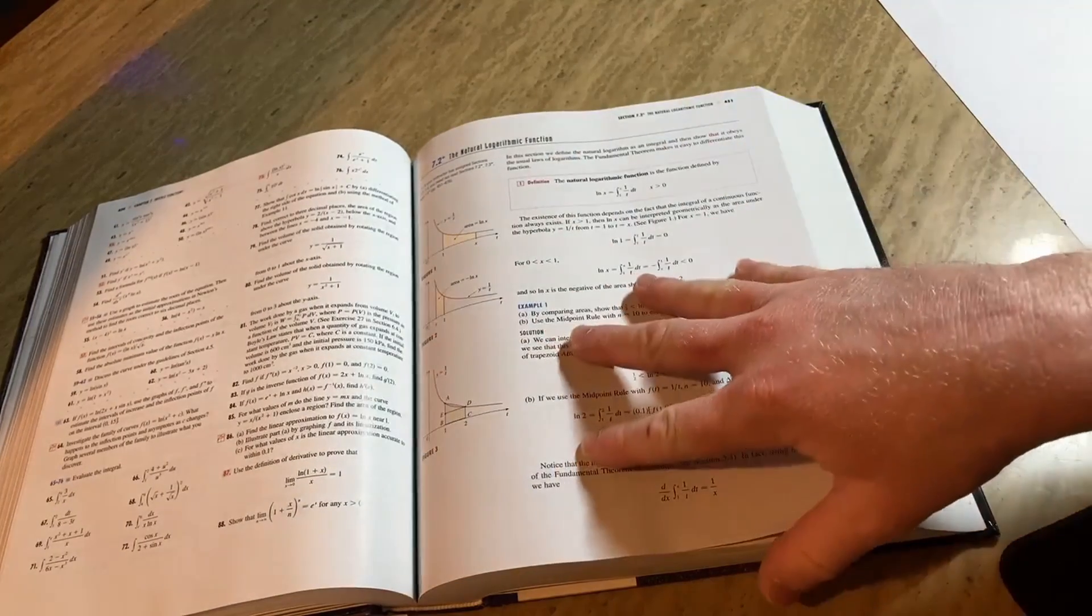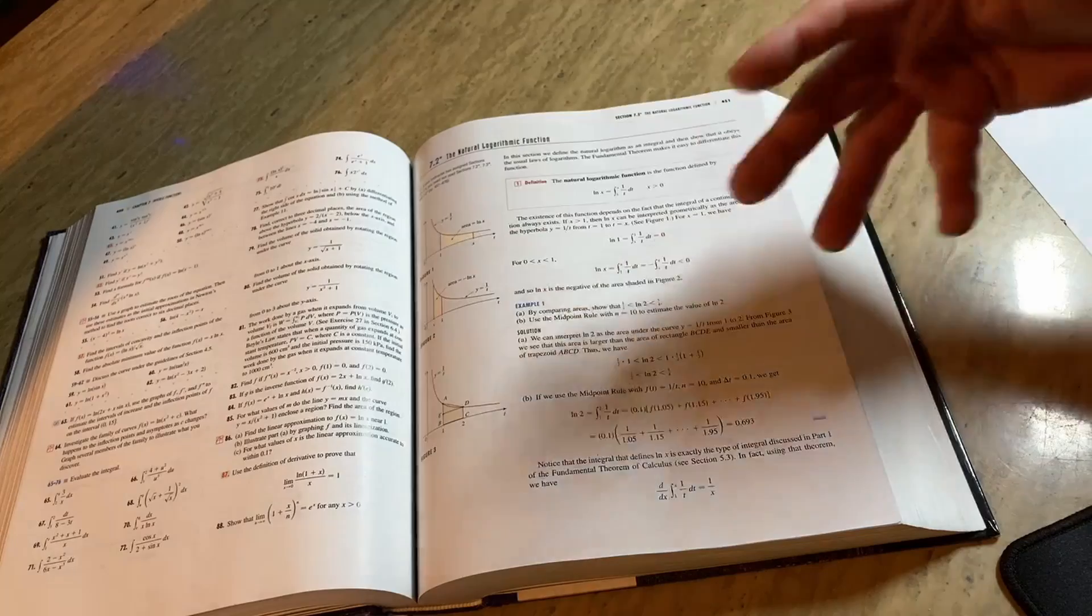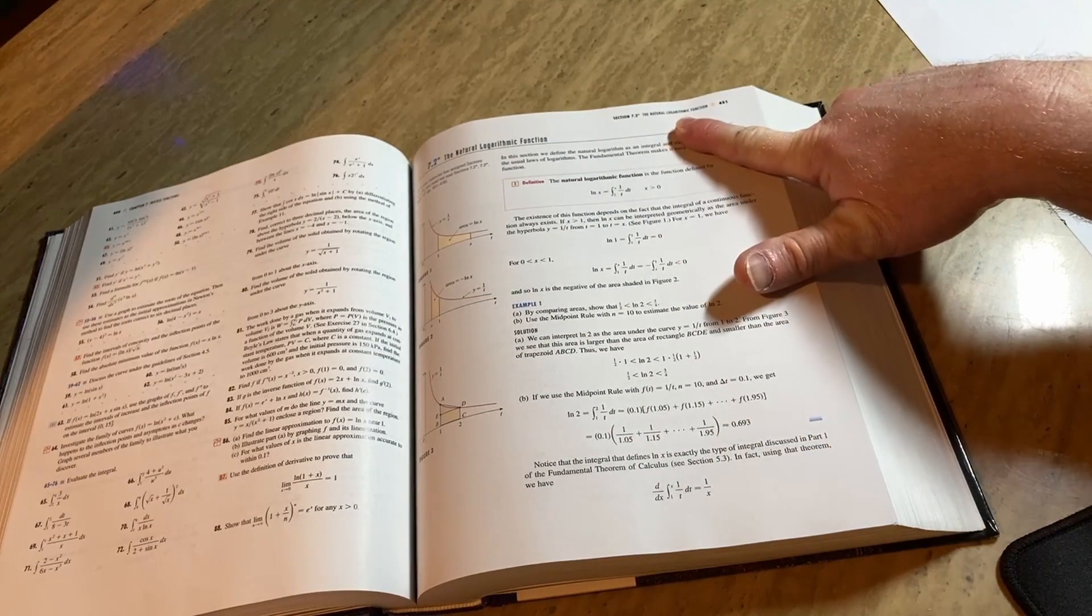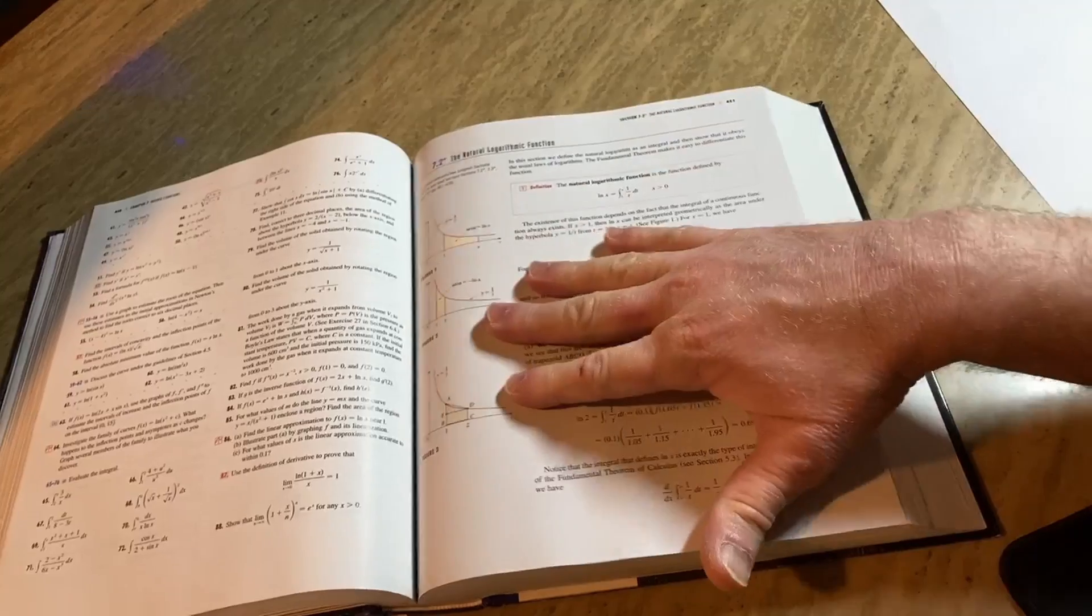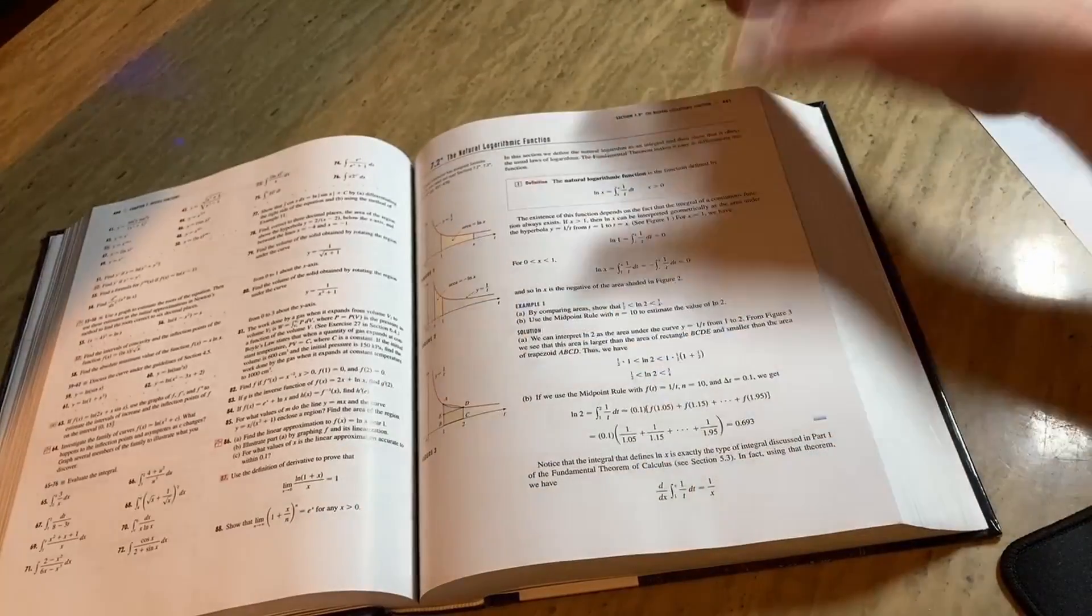I use the early transcendentals version of this book, which basically just introduces the transcendental functions earlier, like the logarithmic function. So here it's introduced in 7.2. So in other books, the early transcendentals one introduces it earlier.